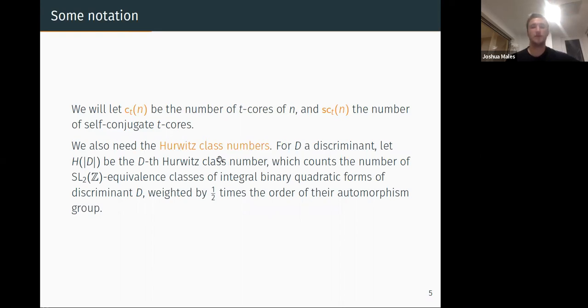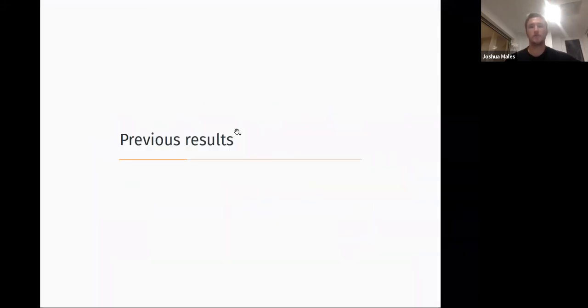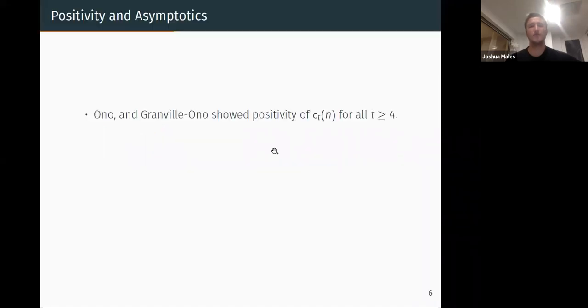So if d is a discriminant we'll let H(d) be the Hurwitz class number. What's this do? As everyone knows this just counts the number of SL_2 equivalence classes of binary quadratic forms weighted by some automorphism group.